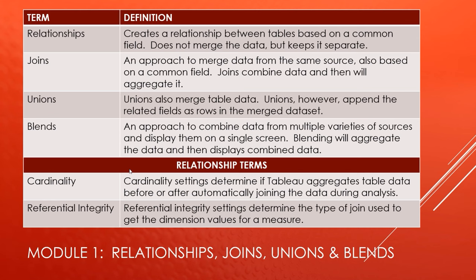This slide talks about the difference between Relationships, Joins, Unions, and Blends. Relationships do not merge the data but keep it separate, and they're based on a common field. Joins are also based on a common field, but they actually merge the data from the same source — joins will combine the data and then aggregate it. Unions also merge table data, but unions append the related fields as rows in the merged data set. Blends are an approach to combine data from multiple varieties of sources and display them on a single screen — blending will aggregate the data and then display the combined data. Because we're talking about relationships in this module, there are two relationship terms: cardinality and referential integrity. Don't worry about them for now — you'll see what they mean as we work with relationships in just a little bit.